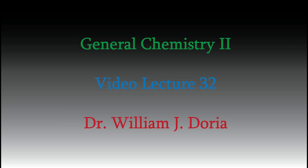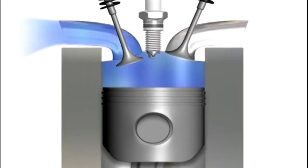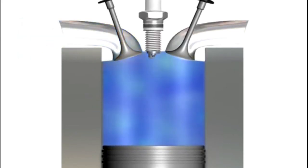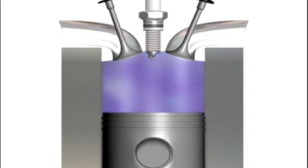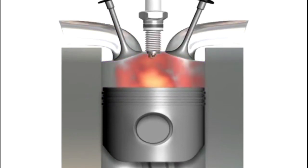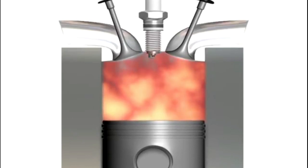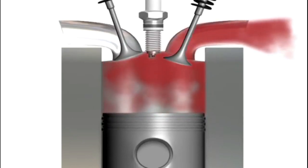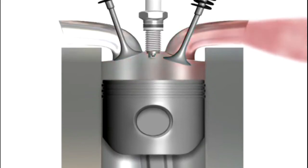Hi, and welcome back to my videos for General Chemistry 2. In the last video, we started talking about redox reactions, and I told you that these are especially important for applications involving fuels and batteries, because many redox reactions are especially exothermic, so they give off a lot of heat we can use to power engines and other machines. We really want to understand the details of redox reactions very well, and we started last time by balancing a few redox reactions, including this one.